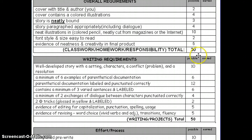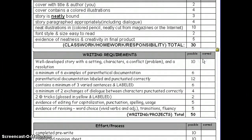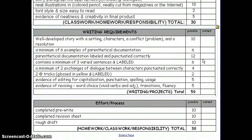This portion of the grade is worth 30 points and goes toward the classwork, homework, and responsibility portion, which is 20% of the grade. It's really not grading content — it's more about following directions and completing the project correctly. The next part is the actual writing, which is worth 50 points and will go into the writing projects portion of the grade, counting as 40%.